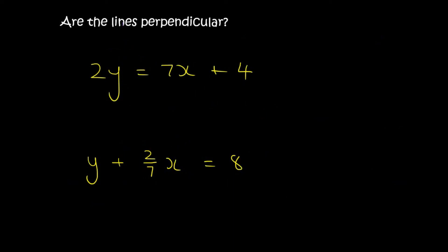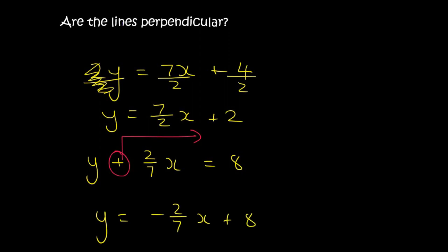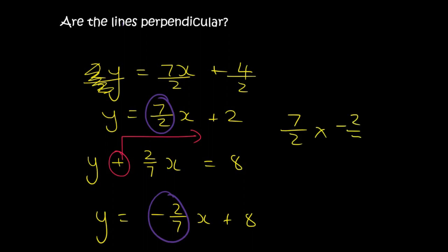For the next one, divide by 2 to get y equals 7 over 2x plus 2. For the second equation, take the 2 over 7x to the other side to get y equals negative 2 over 7x plus 8. The gradient of the top line is 7 over 2 and the gradient of the second one is negative 2 over 7. Multiplying those gives negative 1, so these lines are perpendicular.